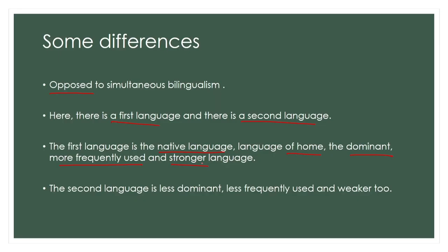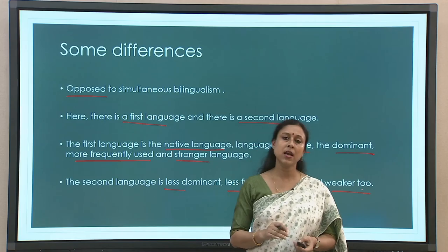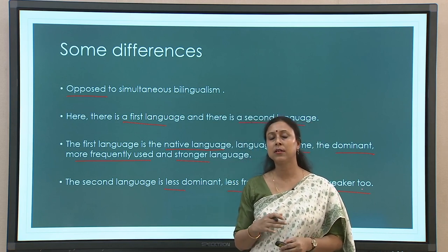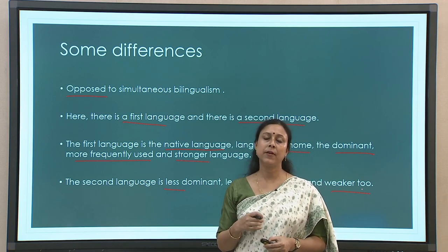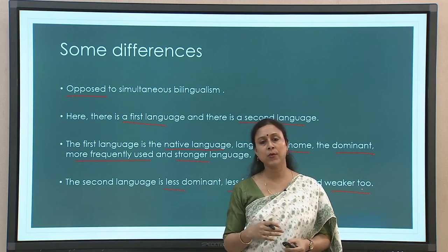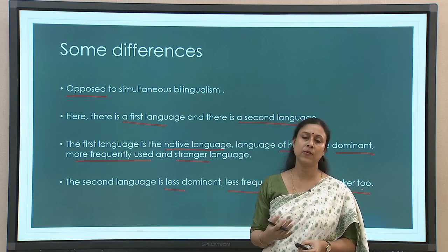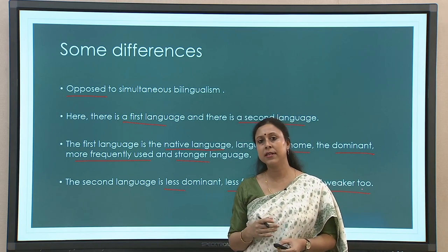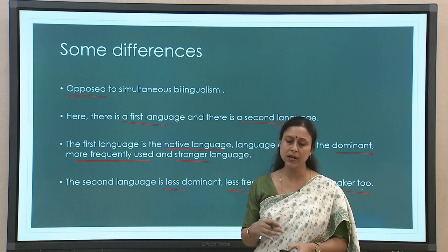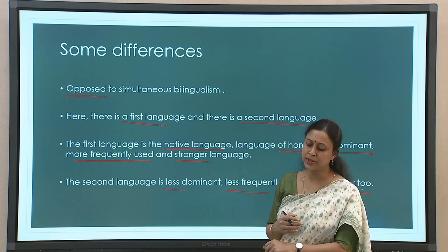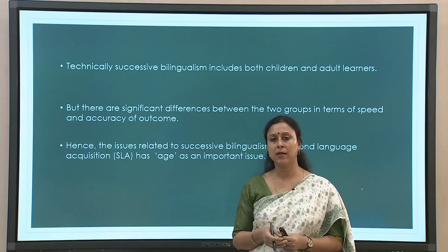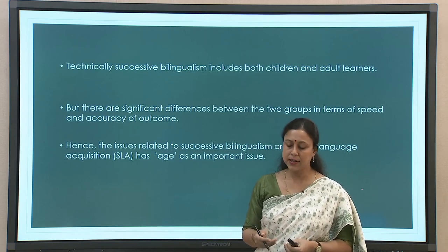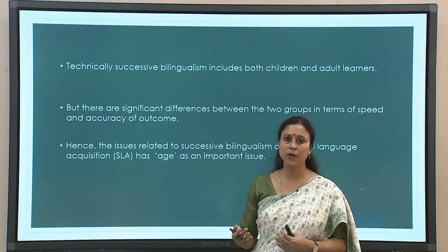In contrast, the second language will be less dominant, less frequently used, and it is typically — though not always — also the weaker language. So to set the baseline: successive bilingualism or second language acquisition refers to a scenario where there is a first language already established, which is the language of home and major activities, and then a new language — the second language — comes in. Technically speaking, successive bilingualism includes every kind of bilingualism where one language follows another.